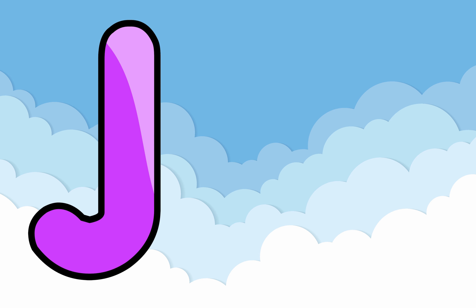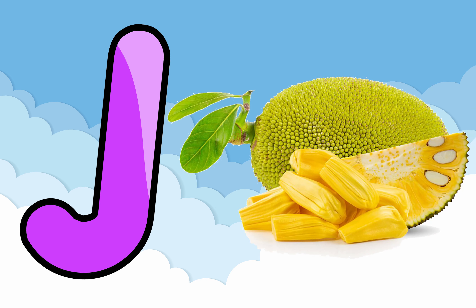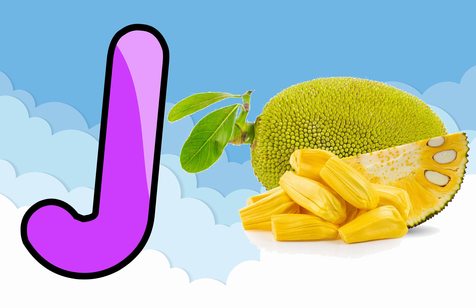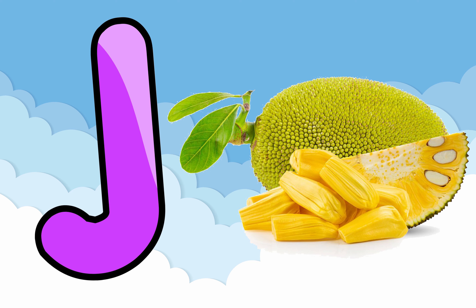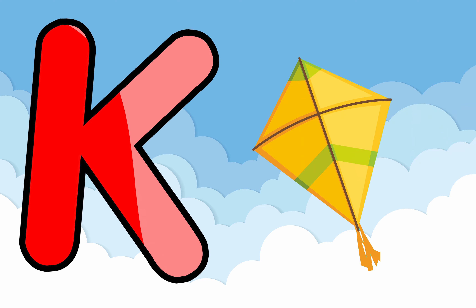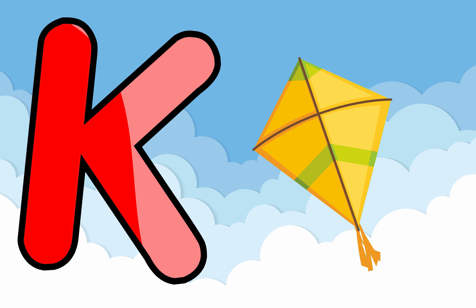J, J is for jackfruit. J, J, jackfruit. K, K is for kite. K, K, kite.